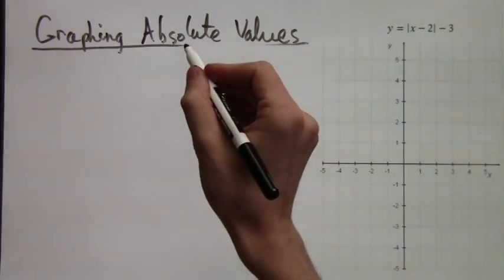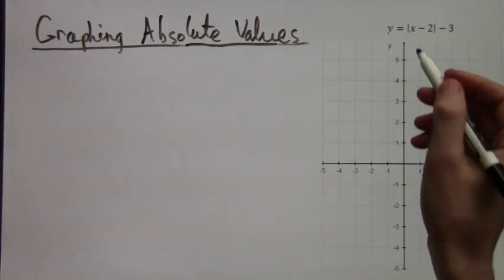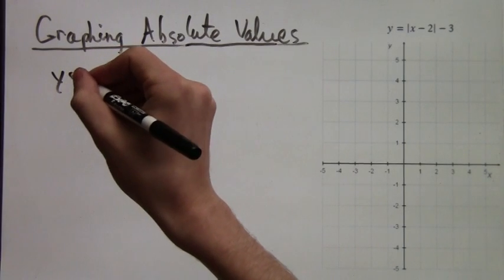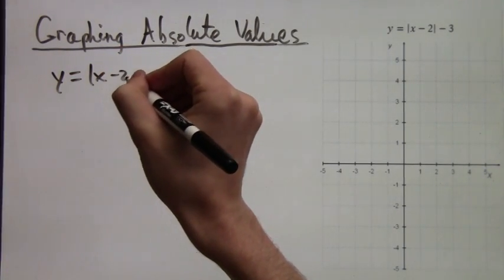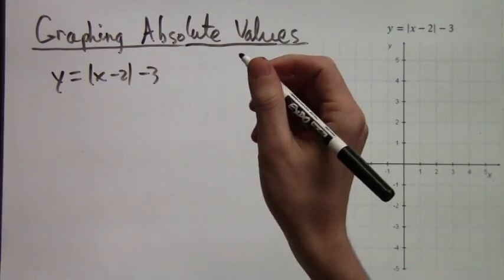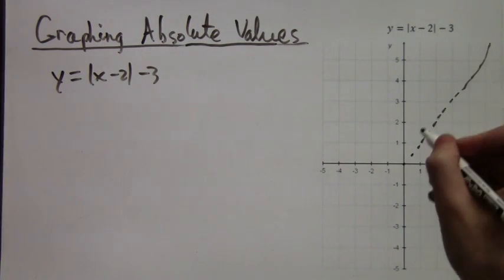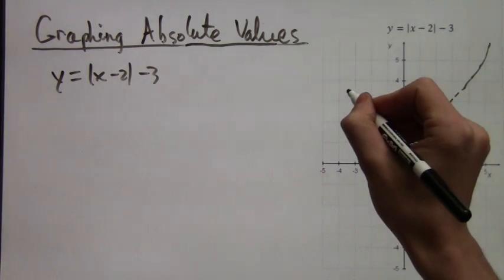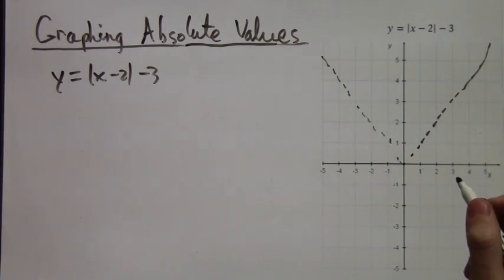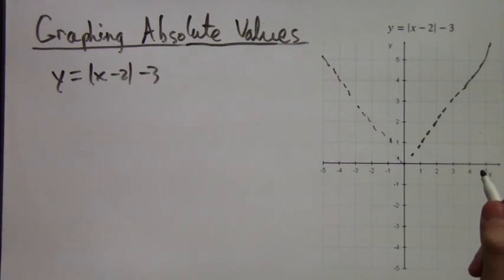Now, all the other graphs, we can draw based on that one graph, using shifts and by stretching. So here, let's look at y equals |x minus 2| minus 3. With the dotted line, I'm just making the graph of the absolute value of x.